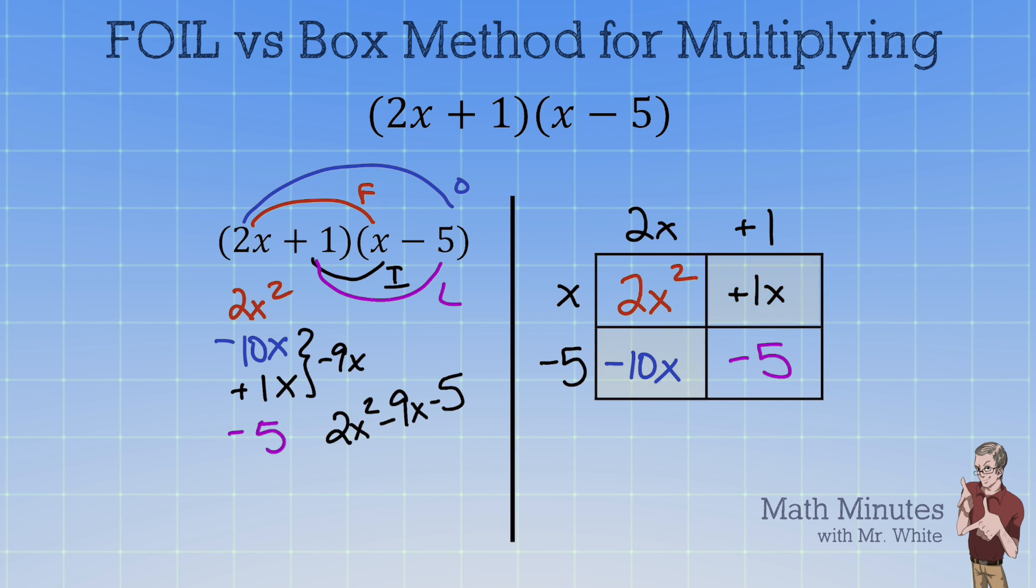Now where do we go from here? Well we just combine those two terms. They're often set up diagonally there. And we get -9x when we combine those two and we bring everything else down also.